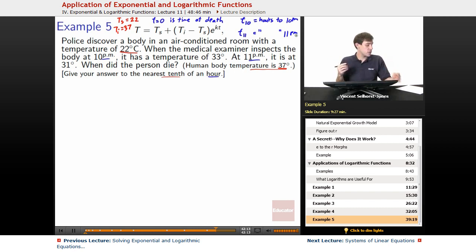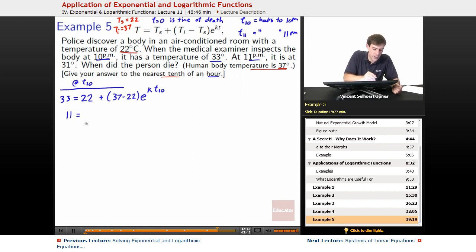With all of these ideas in mind, we're ready to start working things out. So at time 10 p.m., which we don't know how many hours it is after death, but we can still talk about it as t_10, we know that the body is at 33 degrees at 10 p.m. So we've got 33 degrees at 10 p.m. is equal to surrounding temperature, 22, plus initial temperature, 37 minus surrounding of 22, e^(k t_10). Subtract by 22 on both sides. We get 11 equals 15 e^(k t_10). So we divide by that. We've got 11/15 equals e^(k t_10).